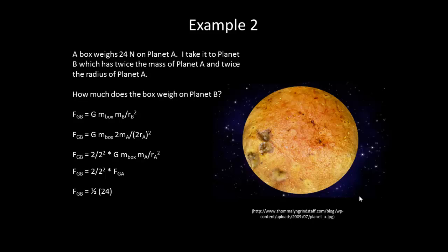So, I end up getting 1 half what the weight of this box was on planet A or 1 half of 24 which gives me 12 newtons. Note that we can think about this in terms of proportionality. So, as I double the mass, I double the force. If I double the radius, I make the force 1 quarter the size. The combination of the two results in the force being half of its original.